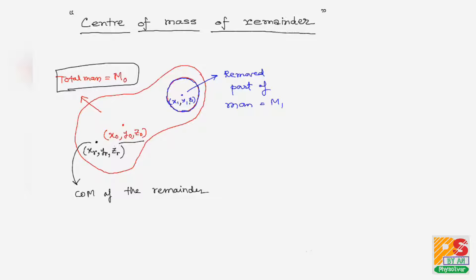From this body, another body of mass m1 is removed. Suppose the center of mass of the removed part is x1, y1, and z1. After removing this blue part, we want to find the position of the center of mass of the remainder. Suppose its position has coordinates xr, yr, and zr — r for remainder.